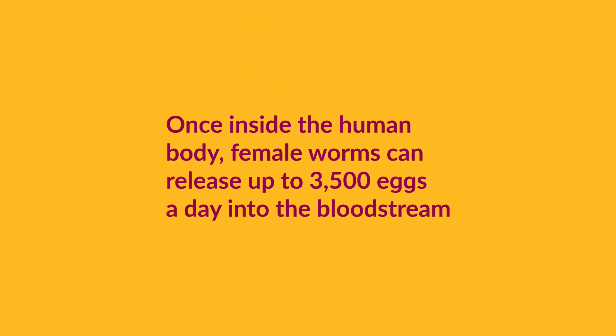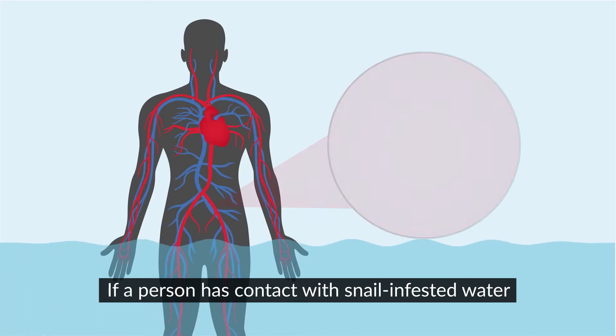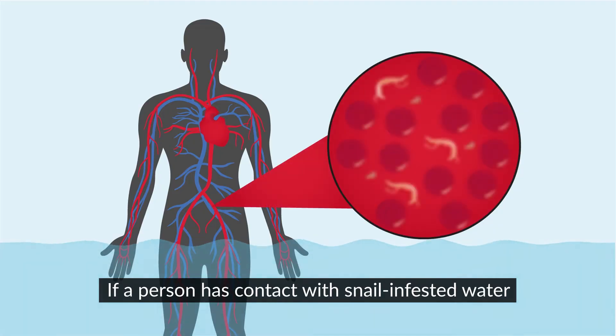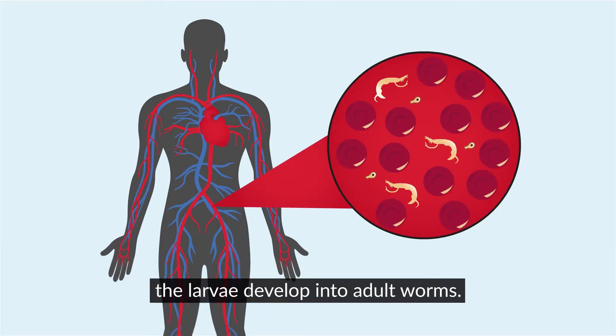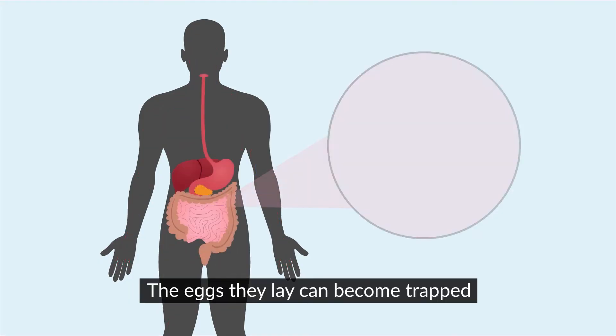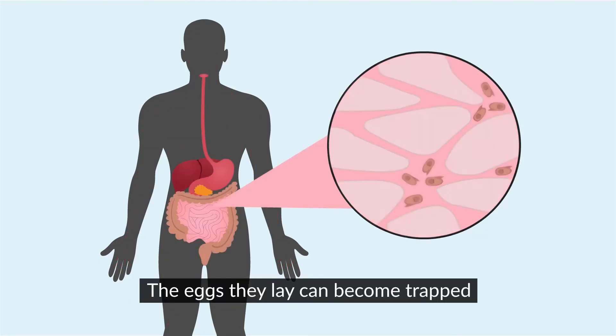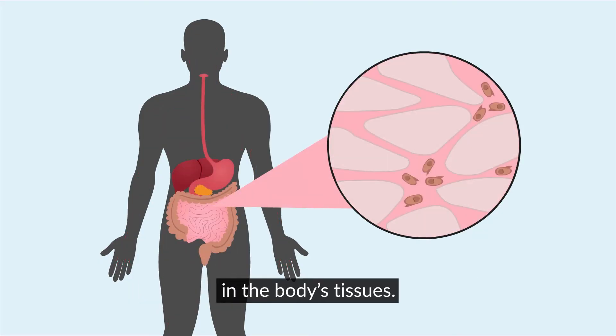Once inside the human body, female worms can release up to 3,500 eggs a day into the bloodstream. If a person has contact with snail-infested water and is infected with larvae, the larvae develop into adult worms. The eggs laid can become trapped in the body's tissues.